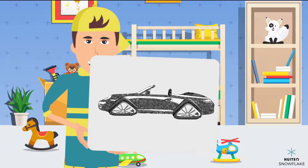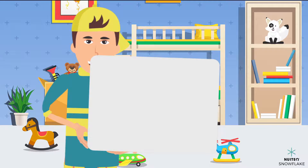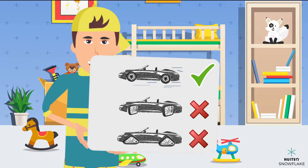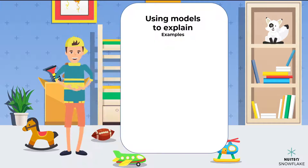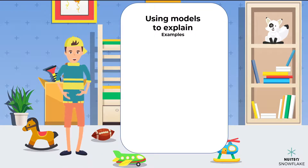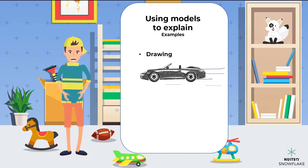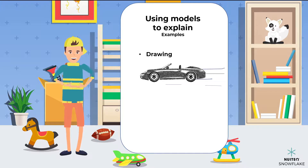The first car with the round tires will be fast and roll easily. The other two cars with the square and triangle shaped tires won't roll at all. I hope Lucas understands from my drawing why round car tires are the best. It is usually very helpful to draw a picture when you want to explain something to someone else.